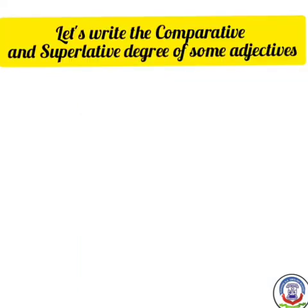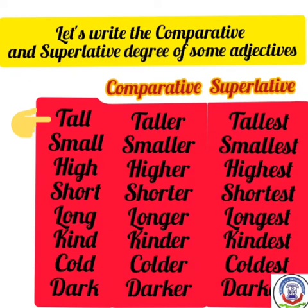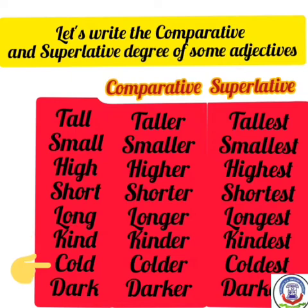Let's write the comparative and superlative degrees of some adjectives: tall → taller → tallest; small → smaller → smallest; high → higher → highest; short → shorter → shortest; long → longer → longest; kind → kinder → kindest; cold → colder → coldest; dark → darker → darkest.